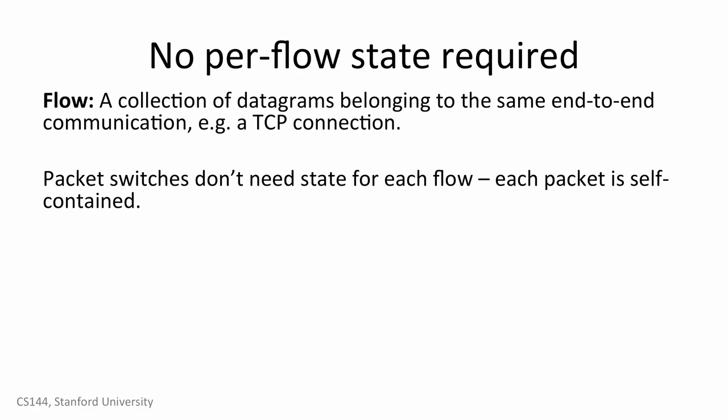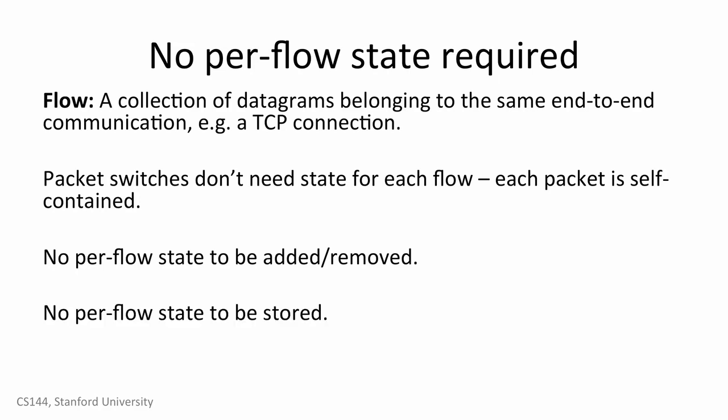The switch doesn't need to worry about adding or removing per-flow state. Imagine if every time you wanted to load a web page, you had to communicate with every switch along the path just to set up the state so that your request could get through — this could make things much, much slower. Instead, you can just send packets and the switches forward them appropriately. The switches also don't need to store this state. Because switches have to be really fast, they need to store state in very fast memory, which would be expensive. This lets switches focus on doing just one thing: forwarding packets quickly and efficiently.